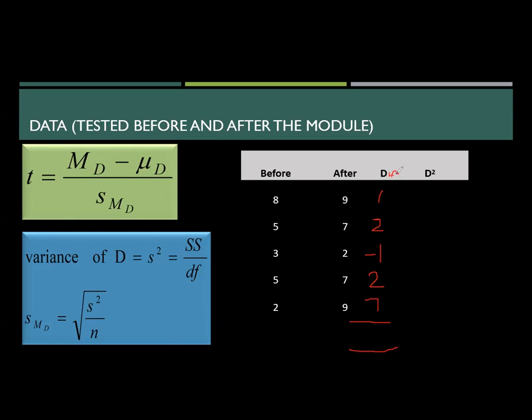So this is for difference, the D is for differences. One times one, that is one. Two times two, that is four. Minus one times minus one is a positive one. Two times two, that is four. Seven times seven, that is 49. Are we together? And let me just have the sum of, let me add this. So one plus two, that's three. Three minus one, that's two. Two plus two, that's four. Four plus seven, that's eleven.